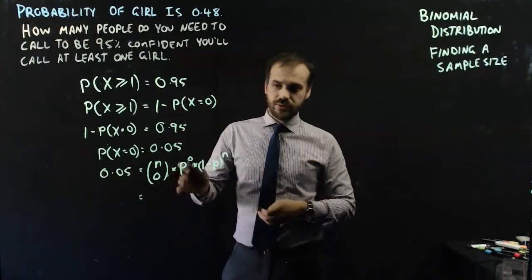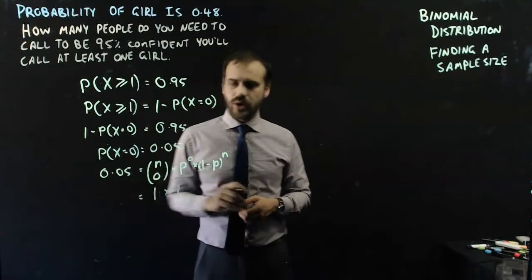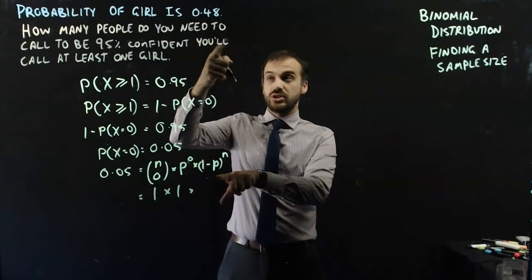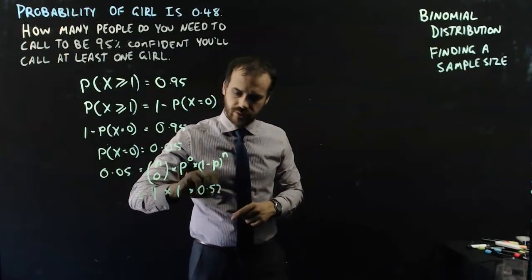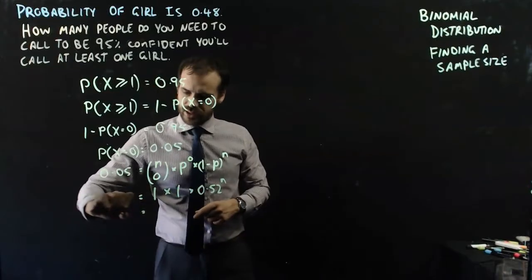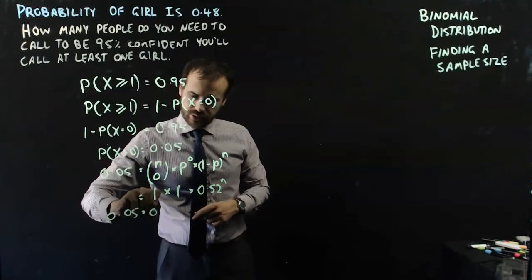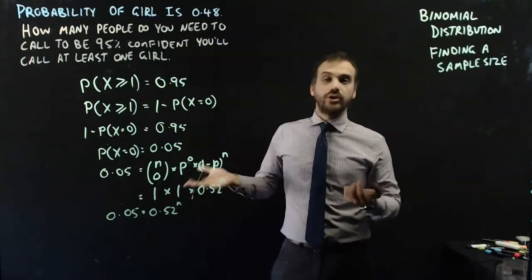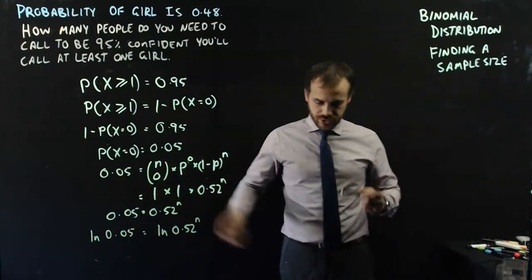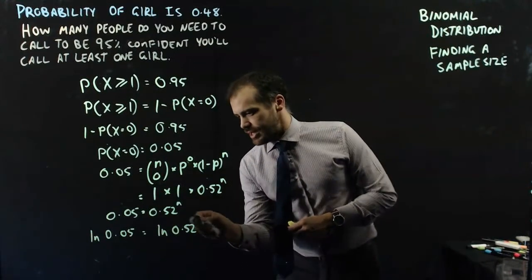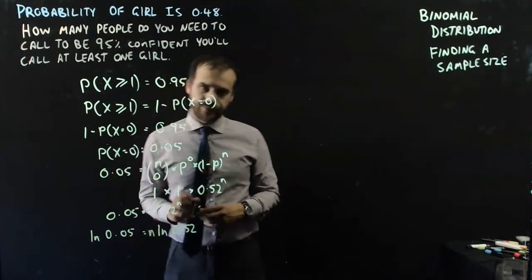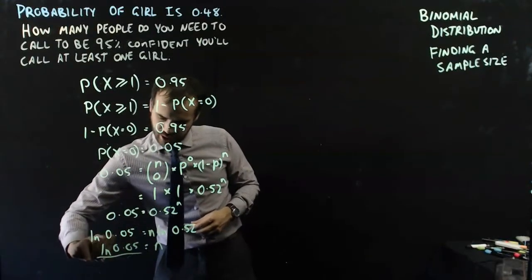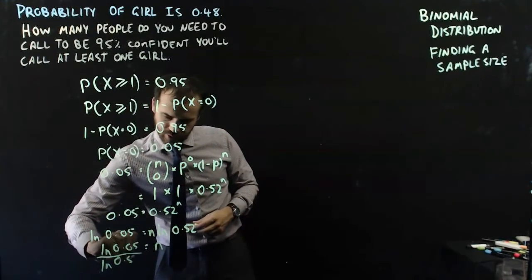nC0 is just 1, and p to the 0 is also 1. So this simplifies to 1 minus p to the power of n. We know p is 0.48, so 1 minus 0.48 is 0.52. Therefore 0.05 equals 0.52 to the power of n. I can solve that using logs — taking the natural log of both sides and using the log power law to bring n out front. So n equals ln(0.05) over ln(0.52).